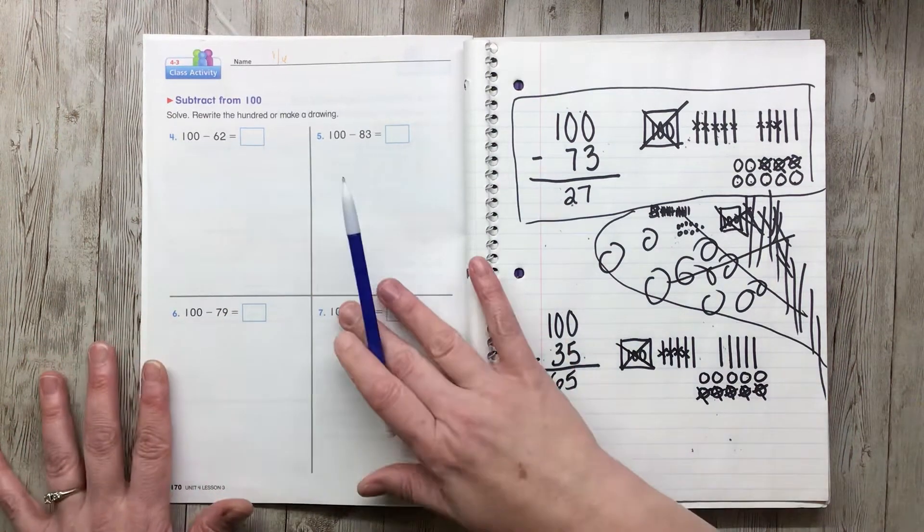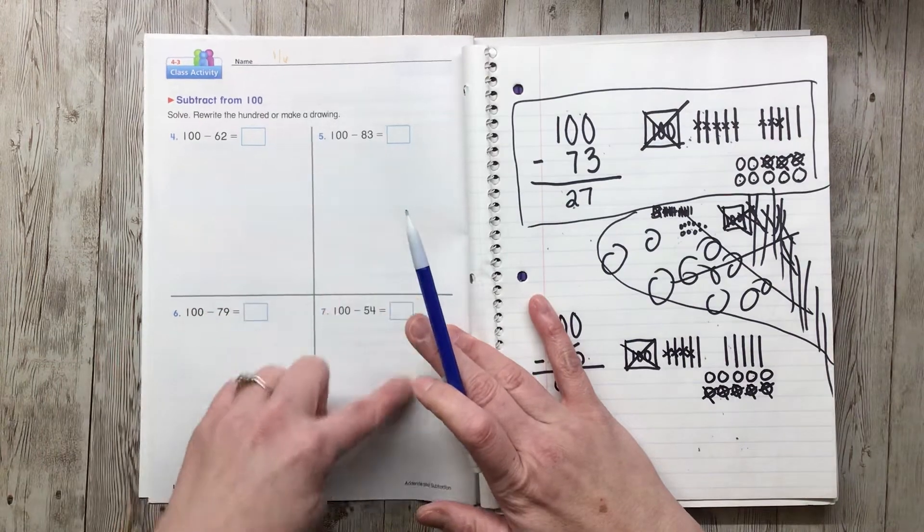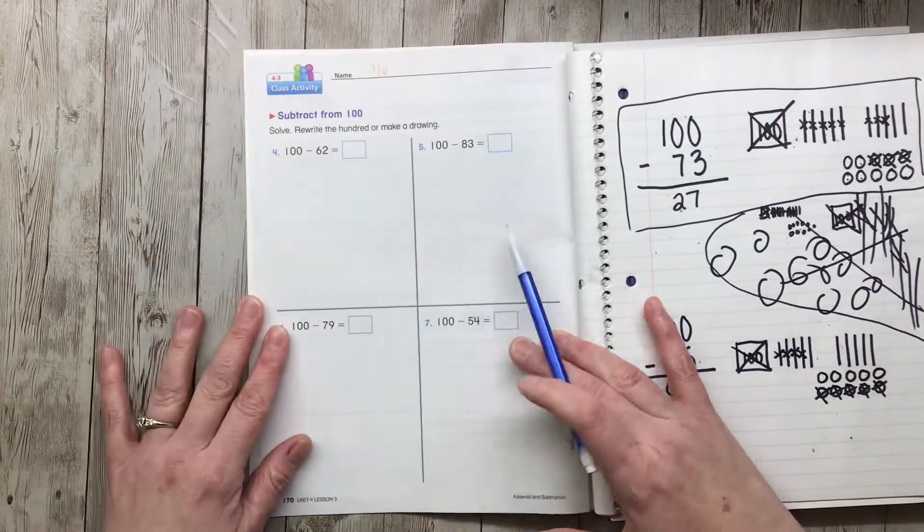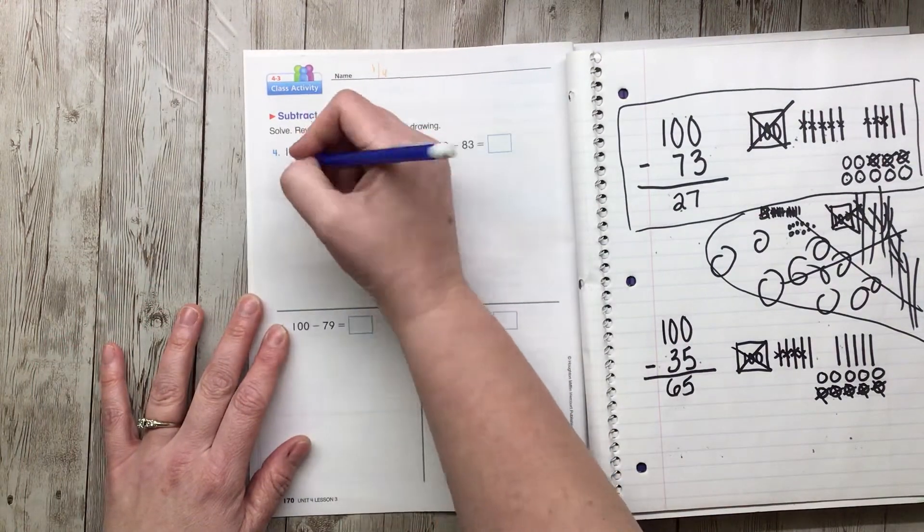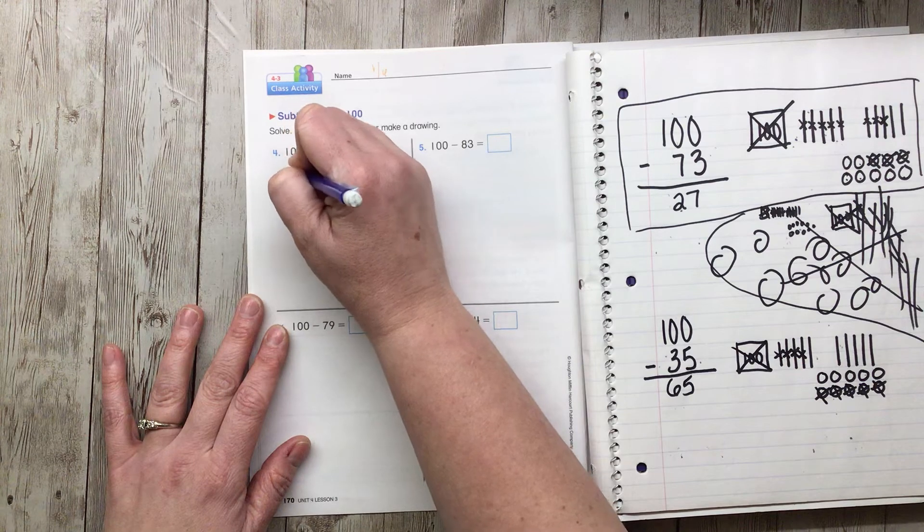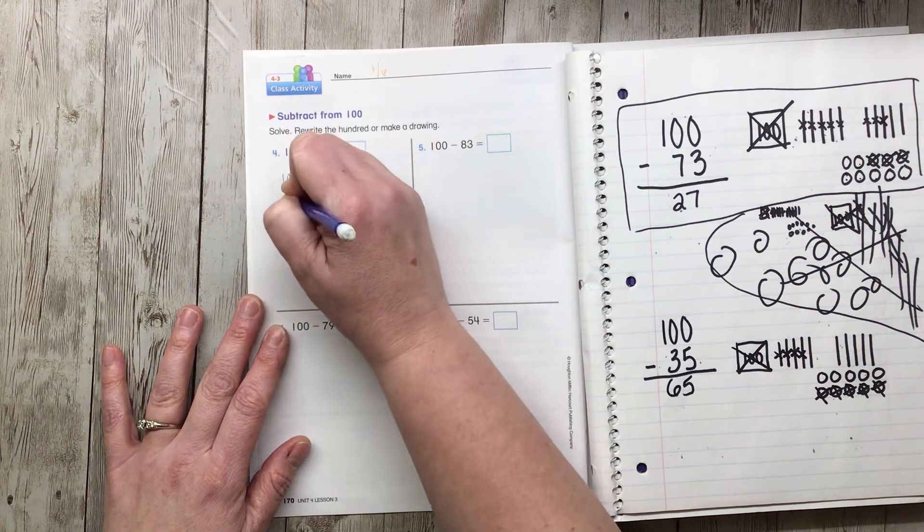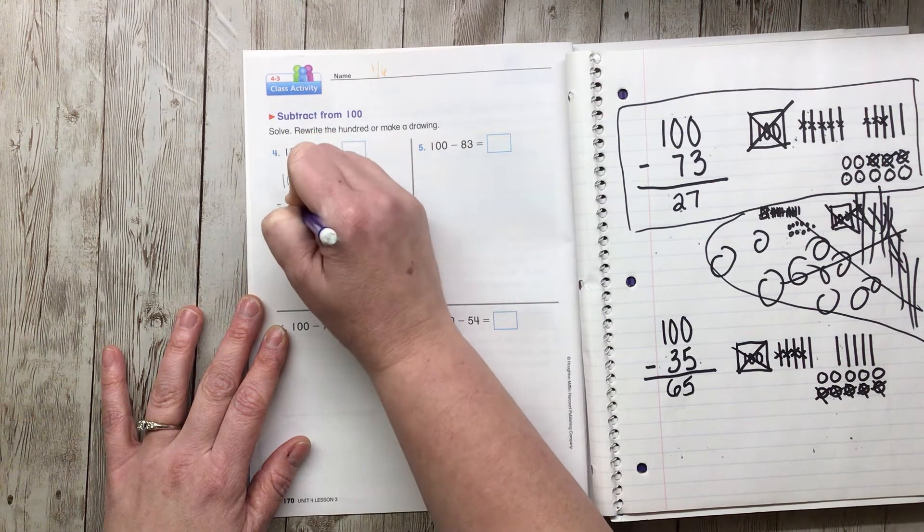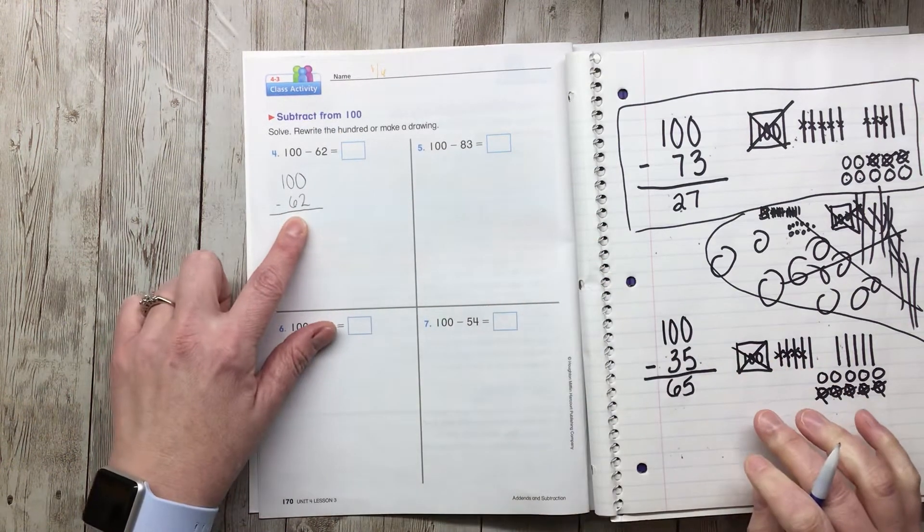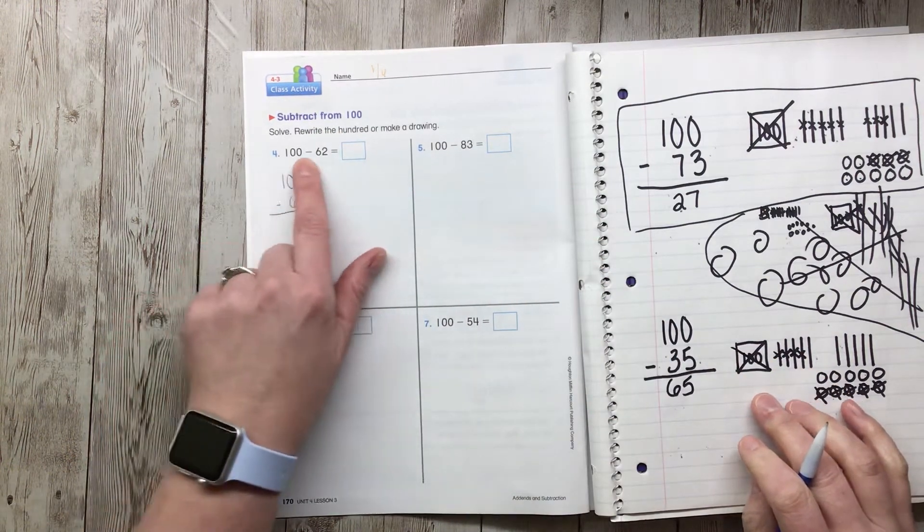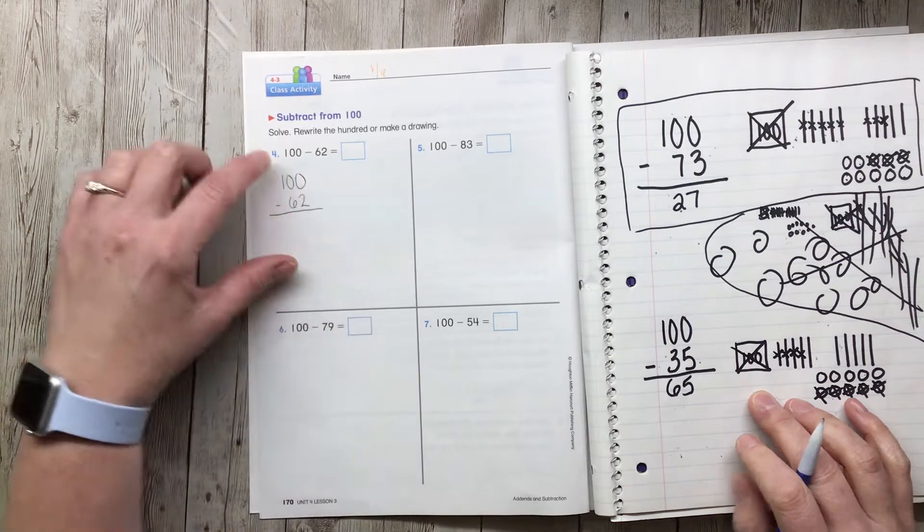I'm going to start with one of these, you're going to finish them. So right here we have 100 minus 62. I always find it's helpful for me to draw it like this. I never like it when they do the equations like this.